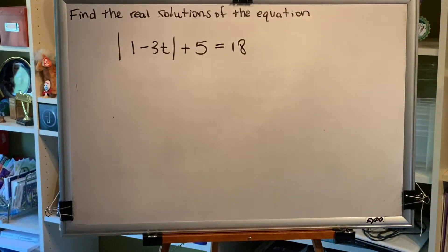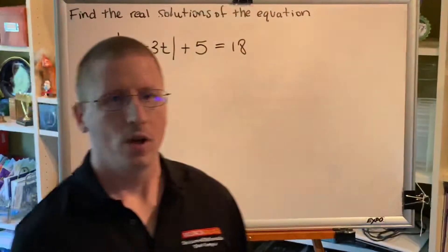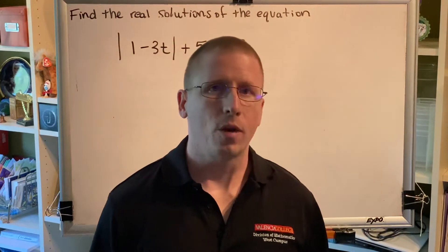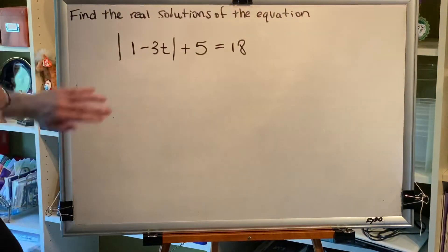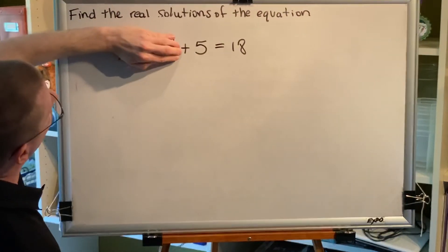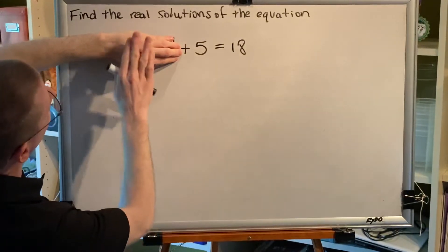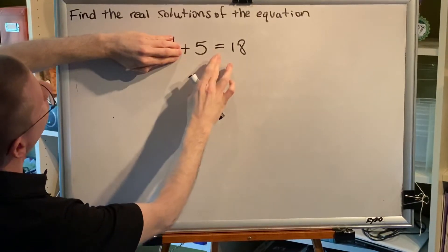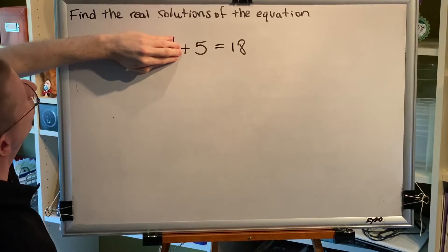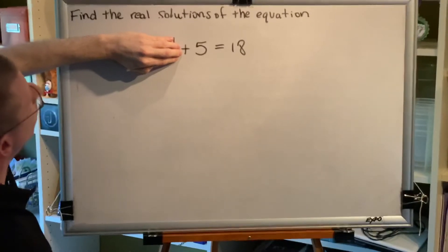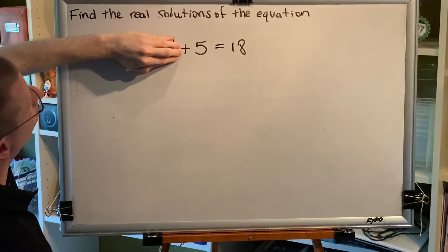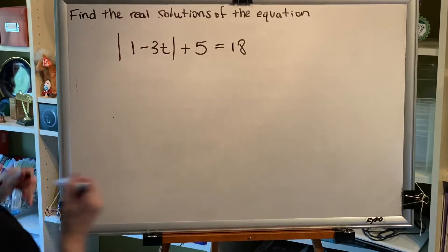Alright, let's use a similar approach as to what we did in a previous problem. I'm just going to temporarily put my hand right over here so that it says something plus 5 equals 18. So, if you think about it, whatever is behind my hand needs to equal 13. So, what's behind my hand? This.